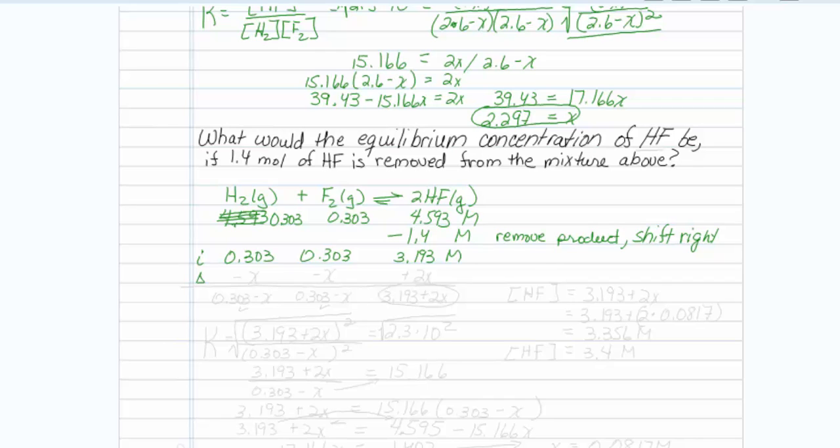These are my new concentrations after I have perturbed the equilibrium. And as I stated, it's going to shift to the right, so I am going to lose some of this, lose some of this, and gain 2x of this. So this concentration will be 0.303 minus whatever amount I lost, 0.303 minus whatever amount I lost, and this one will be 3.193 plus 2x.